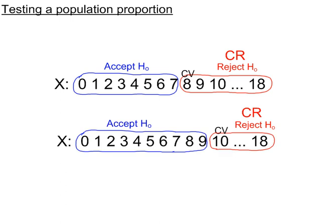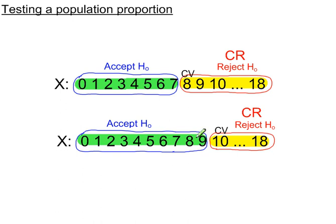Using a smaller significance level, this critical region shrinks. Because this region is smaller, the probability of a type 1 error is now smaller. On the other hand, this acceptance region is now larger. Type 2 errors depend on the size of the acceptance region, so the probability of a type 2 error has increased while the probability of a type 1 error has decreased.